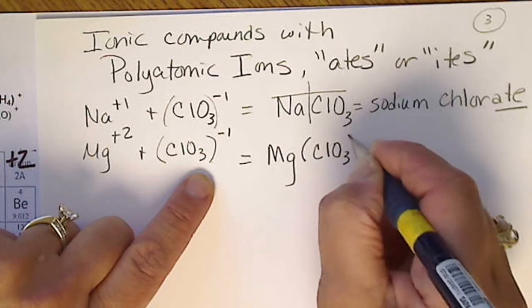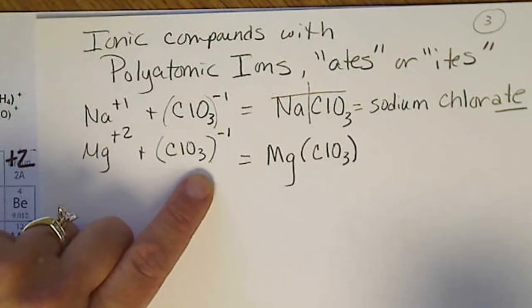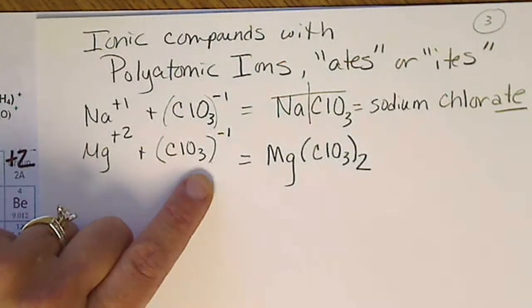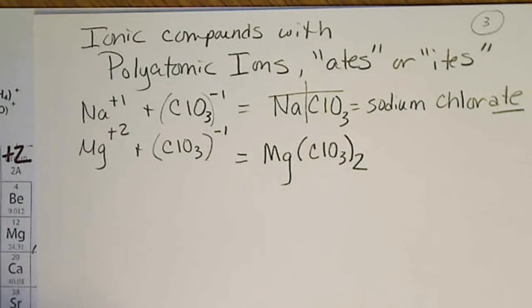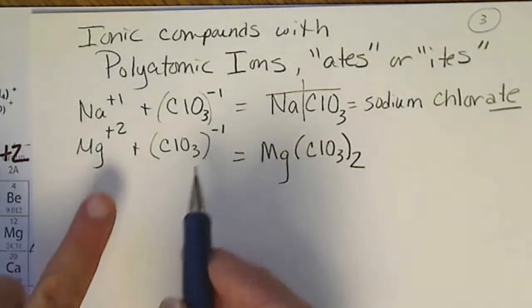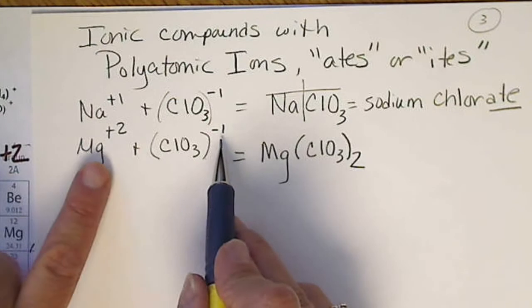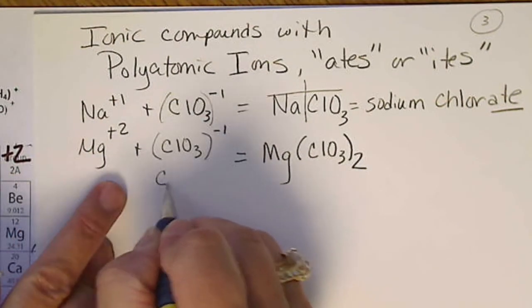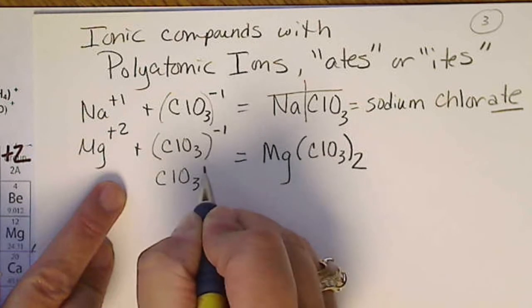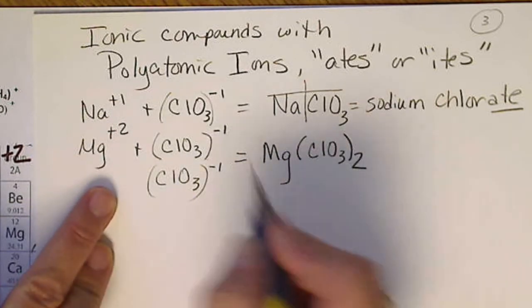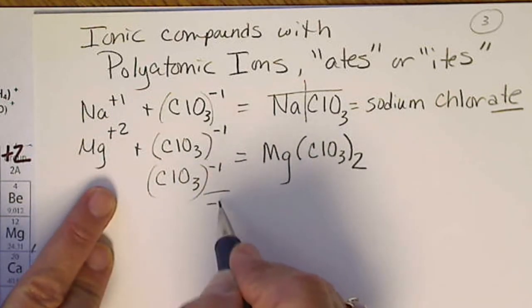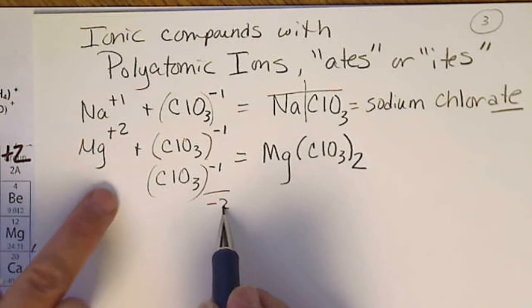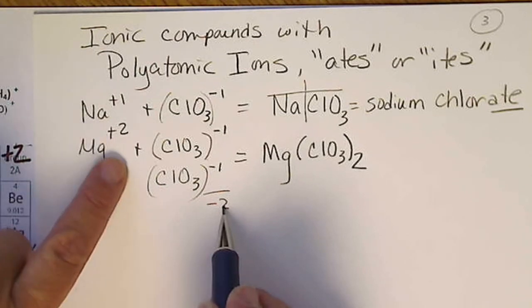So it's going to take two of these chlorates, and that's why we need the parentheses. We'll put the entire formula in parentheses, and then put a two outside of the parentheses. So what we get our formula from the charges canceling to zero, that would be as though there were two of these groups. Minus one and minus one gives us a negative two, and a negative two cancels a positive two, magnesium.